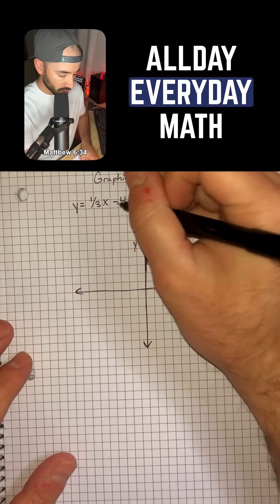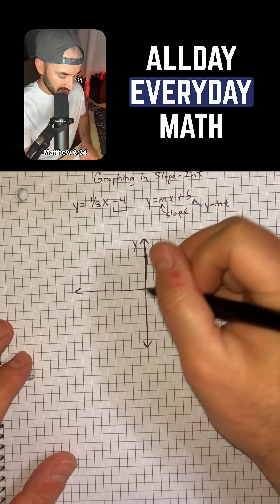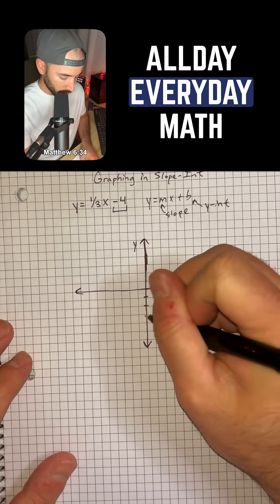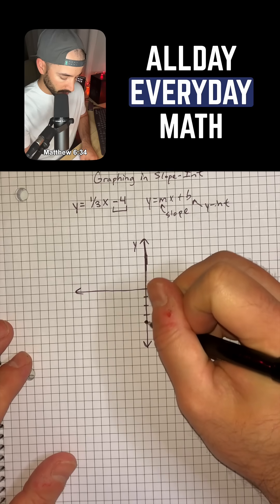So in our actual equation, negative 4 is our y-intercept, so we can go down 1, 2, 3, 4 and put a point there.